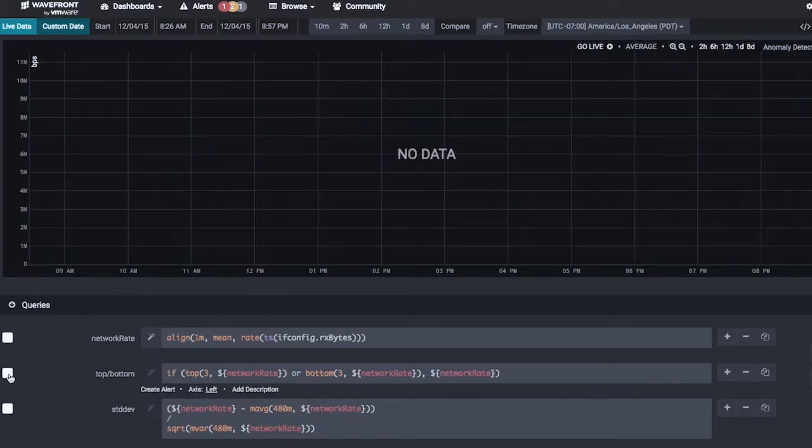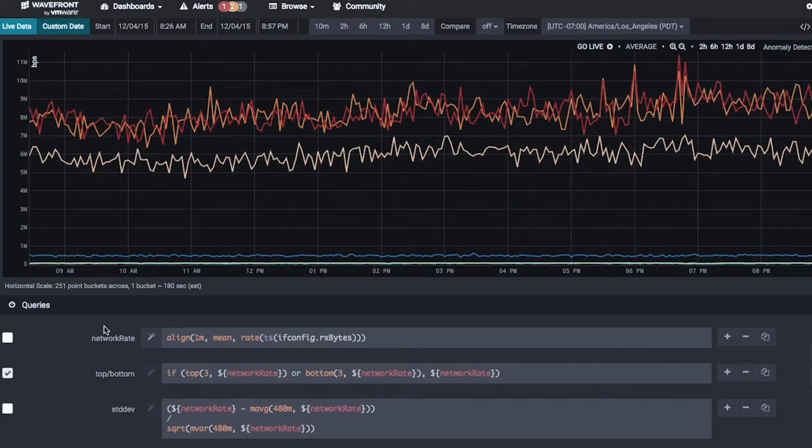One way you might want to find these anomalies is to actually look at the highest and lowest values, the extreme outliers of a given cluster of machines. In Wavefront, that works with the top and the bottom commands. If I do that right here with the top three and bottom three commands, you can see you've pulled them out, but that's not actually what we wanted in the first place.